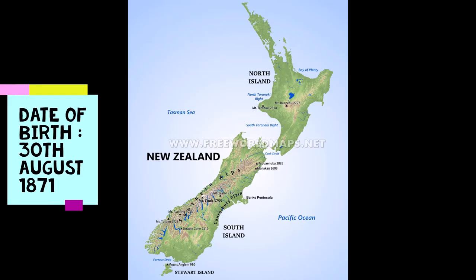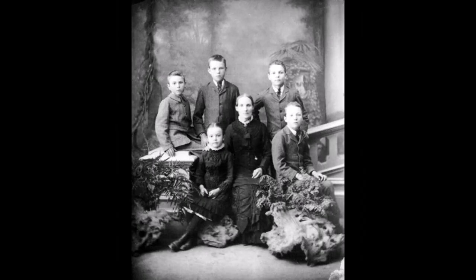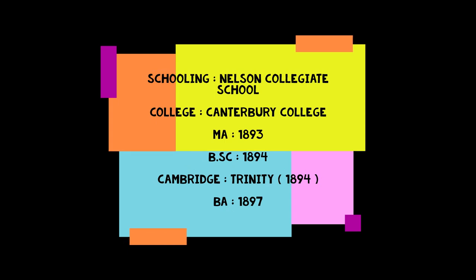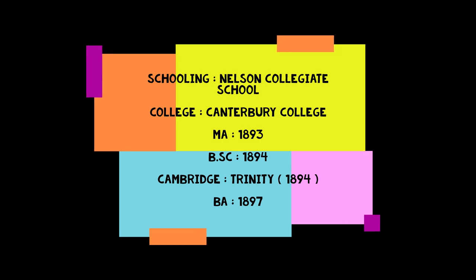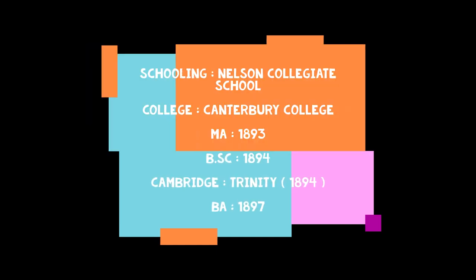Rutherford was born on 30th August 1871 in New Zealand. He was born to James Rutherford and Martha Thompson as their fourth child. He did his schooling at the Nelson Collegiate School and then continued his studies at the Canterbury College. He earned his MA degree in the year 1893 and BSc in the year 1894. He joined the Trinity College, Cambridge in the year 1894 and received his BA degree in the year 1897.